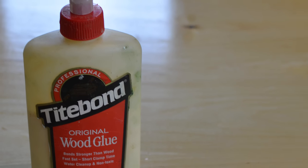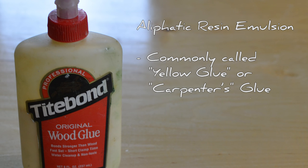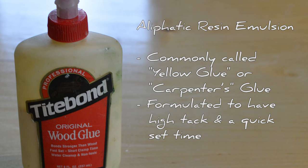Titebond Type 1 wood glue is made from aliphatic resin emulsion which is commonly referred to as carpenter's or yellow glue. It has similar properties to PVA but is specifically formulated to have high tack with a quick set time. Titebond Type 1 is more resistant to moisture when compared to PVA glue.